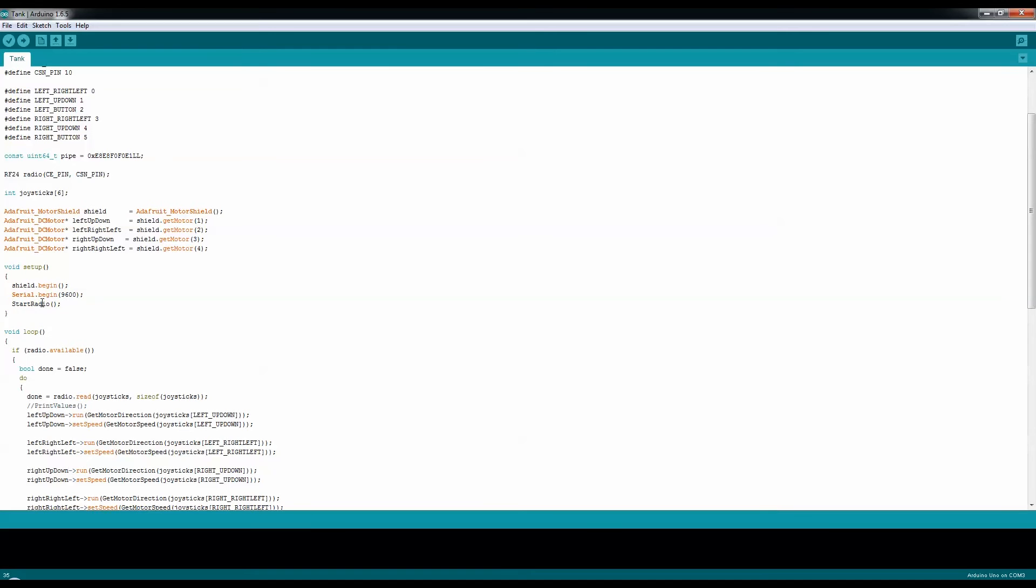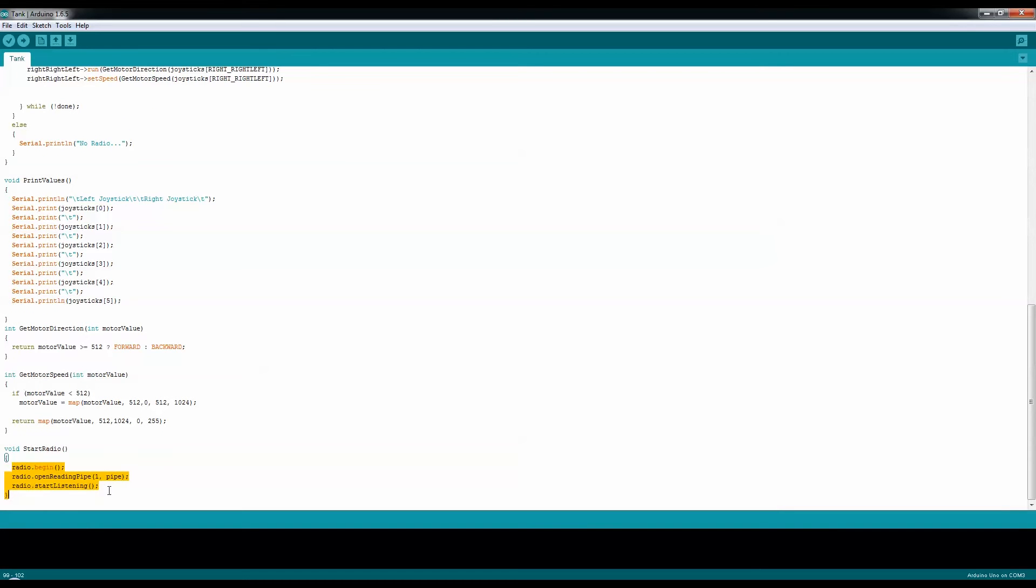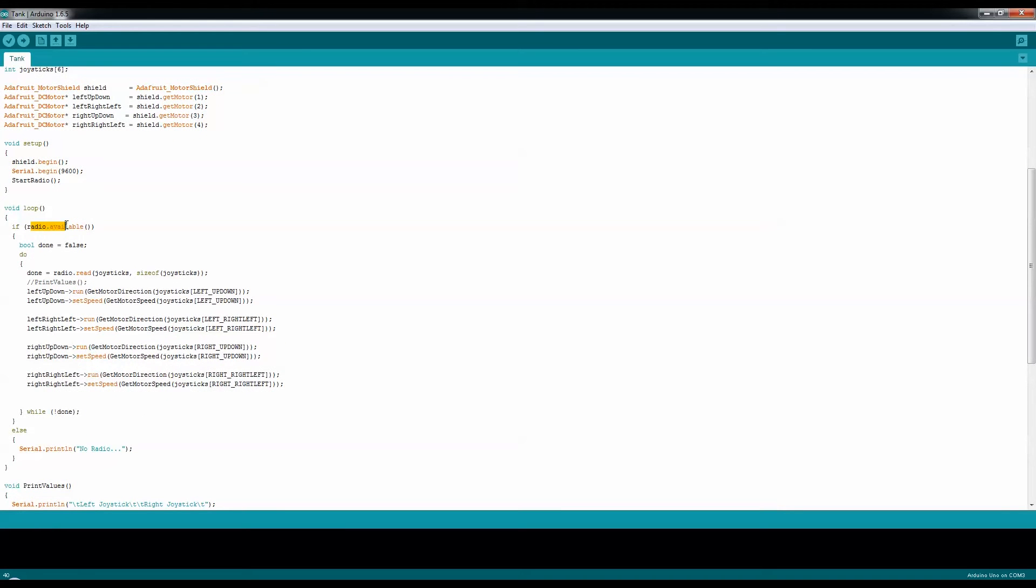The setup is fairly simple, just beginning. And this is just for debugging. The start radio function is just a small function that does this. It's basically set to begin, opening radio pipe, sending one pipe and the pipe value, and start listening. The loop itself, we're just checking to see if there's a radio available. If it's not, it's just going to output to the serial that there's no radio available and then it will continue on. If there is a radio available, we're trying to make sure that we're not done. And the done will be true if it cannot read anything from the radio itself. Which means if I disconnected the transmitter, then the radio will not be available over here and the done will be true. Otherwise, we'll just read those six values and I'll set up which direction I want to run and what speed. And I'll do that for the four DC motors.